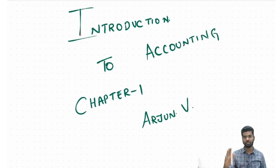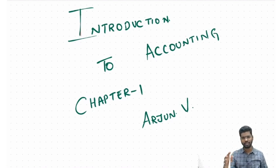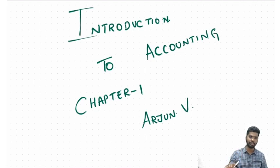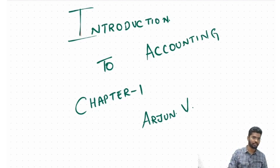What we shall be doing today is run through the chapter of what is accounting, what are the different objectives of why we do accounting, what are the different kinds of accounting, and also from the examination perspective we will cover important topics. This chapter should be covered in the next 20 to 25 minutes.